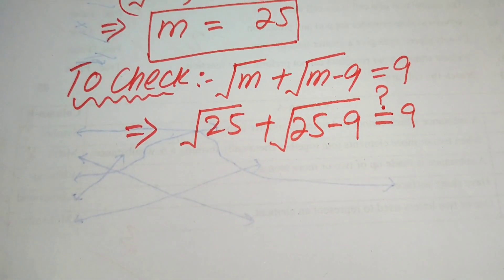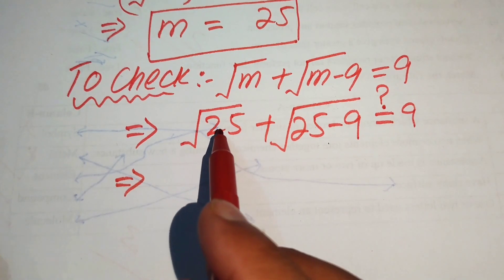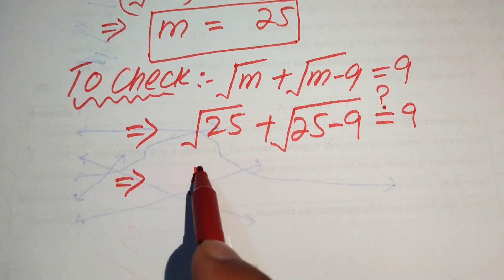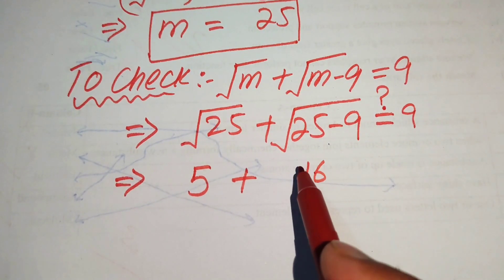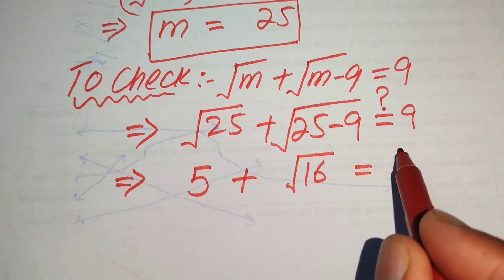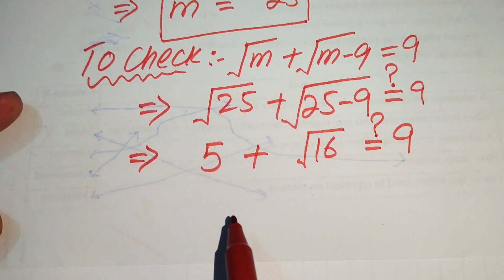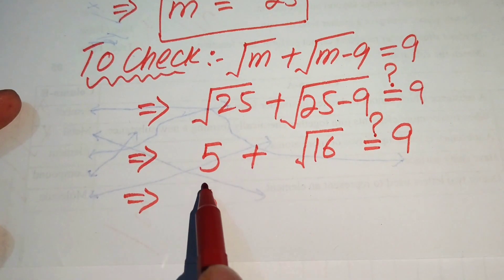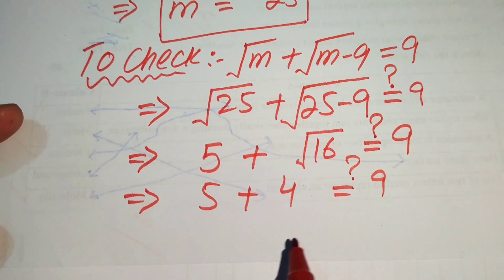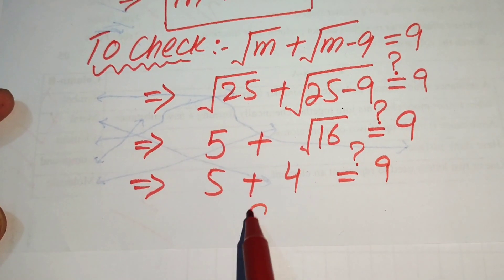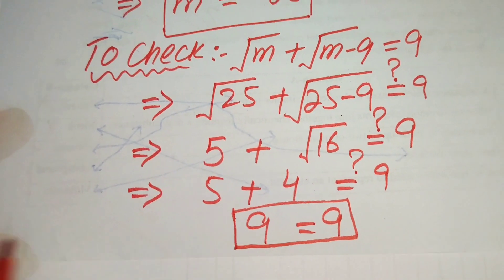Now we simplify the left hand side. The square root of 25 is 5, and 25 minus 9 is 16, so we have 5 plus square root of 16. The square root of 16 is 4, so we get 5 plus 4, which equals 9. This shows that the left hand side equals the right hand side.